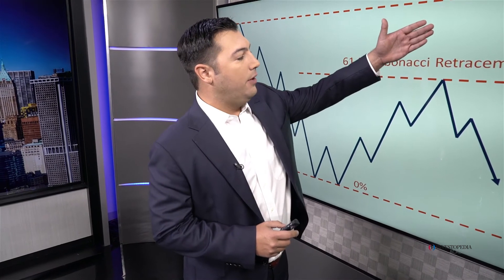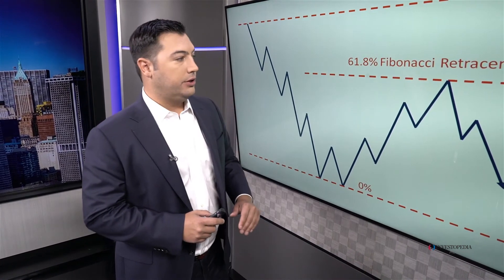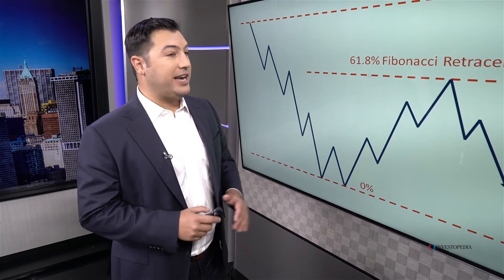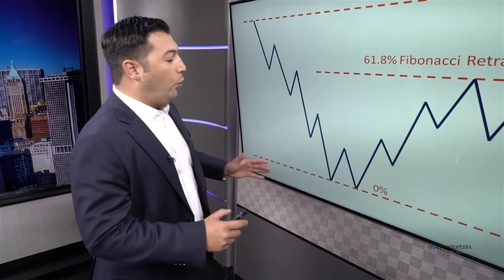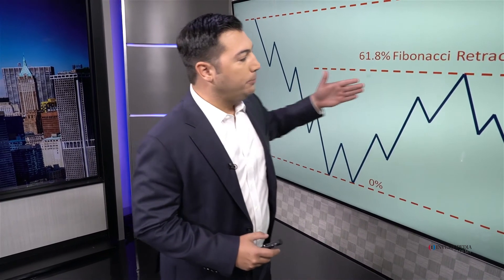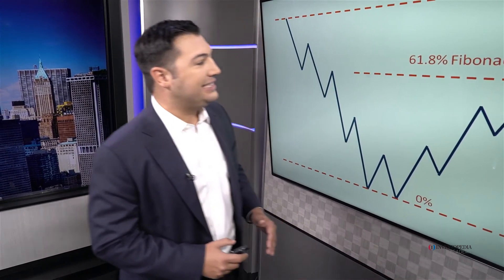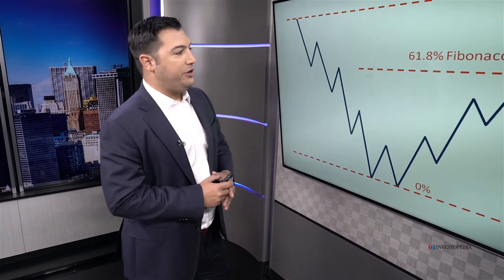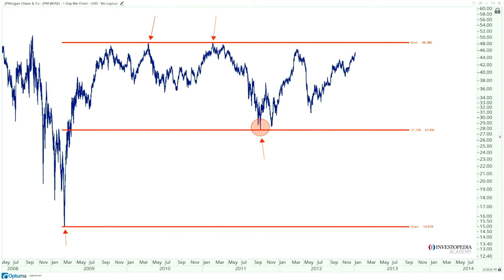The market might just recognize that level temporarily, or it might exceed it and recognize it as new support. But from experience, nine times out of ten the market is going to respect those levels, even if just temporarily. So we can fully expect some sort of consolidation or even a reversal to take place at the 61.8% Fibonacci retracement of that previous decline.